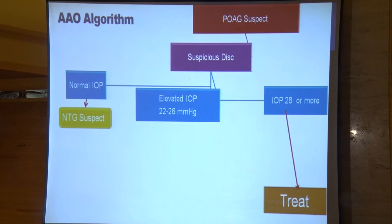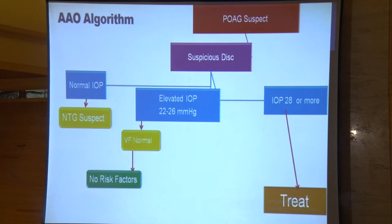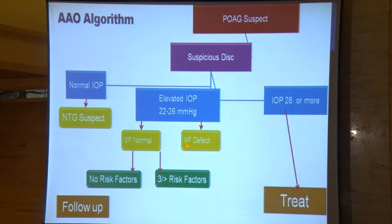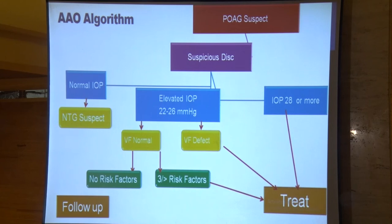A patient will never become blind in a day or two, so in the meantime we can always investigate such patients with visual field examination. If it is normal and there are no risk factors, we can simply follow up these patients — there is no rush to start treatment. But if there is a visual field defect or three or more risk factors are present with an IOP between 22 and 26 mmHg, then obviously we should treat these patients.